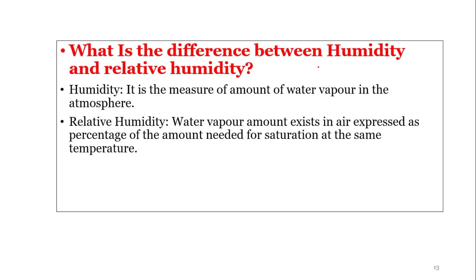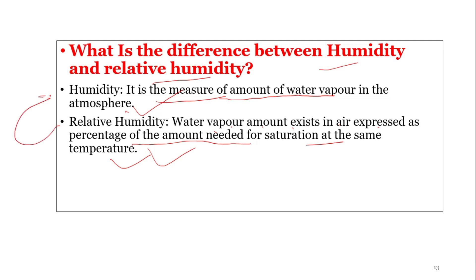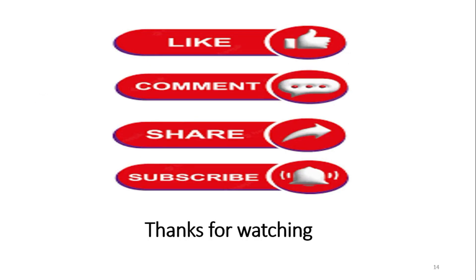What is the difference between humidity and relative humidity? Humidity is a measure of the amount of water vapor in the atmosphere. Relative humidity is the amount of water vapor present in the air expressed as a percentage of the amount needed for saturation at the same temperature. That covers all the topics in this video. If you like the video, please like, share with your friends, comment any questions or topic requests, and subscribe to the channel. Thank you for watching!